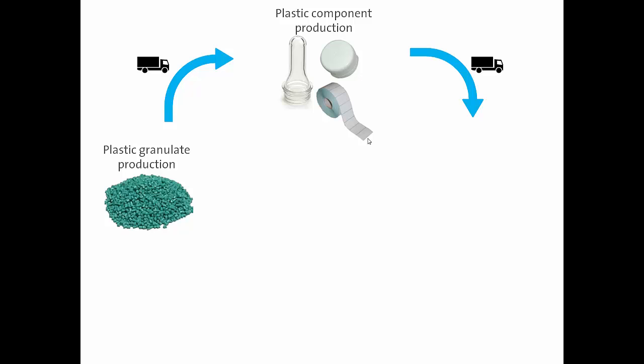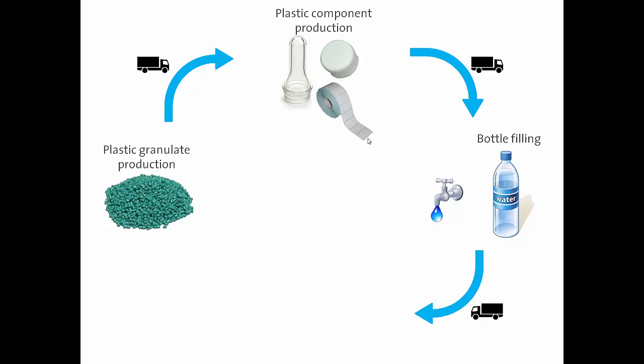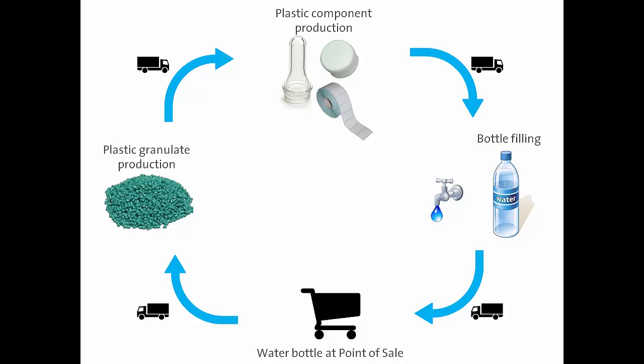These components are then transported to another location where the bottle is blown up, filled with water, and the lid and label are added. The next step is transport to the point of sale or a warehouse. There are likely other processes involved, namely recycling processes, additional transport, and how recycled bottles are shredded into flakes and reused as new plastic granulate, but we won't be including any of these within the system boundaries of this study.